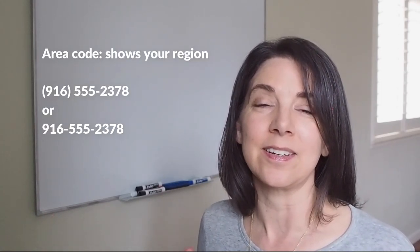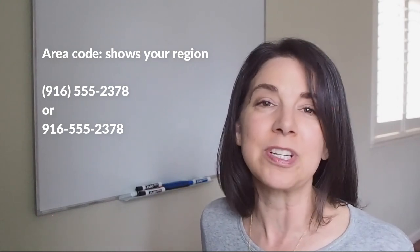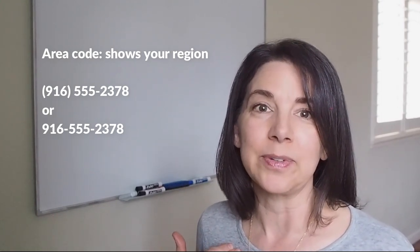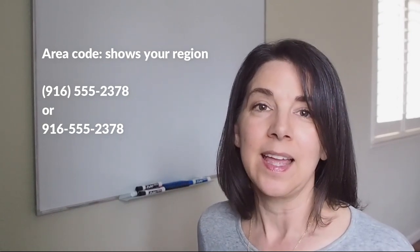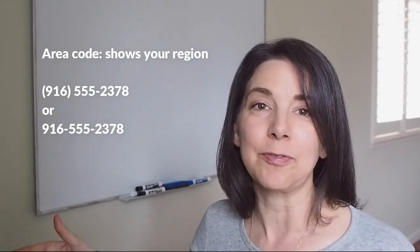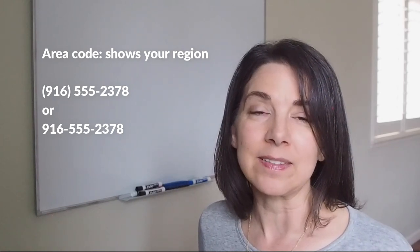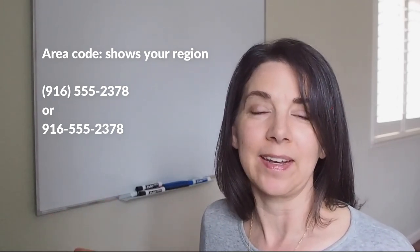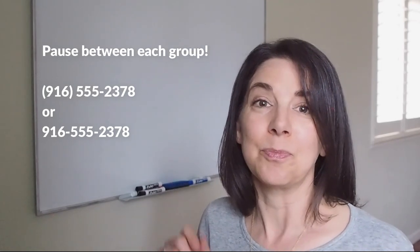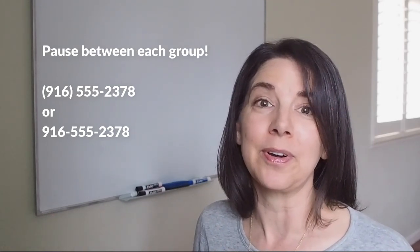We also have what's called an area code, and that's the code that shows the region that you live in. For example, in the city where I live, the area code is 916. And we put that at the beginning of the phone number in parentheses, or sometimes we just add it at the beginning of the number and then another dash. So be sure that when you give your phone number, you put the dashes there and that you pause when you say it.